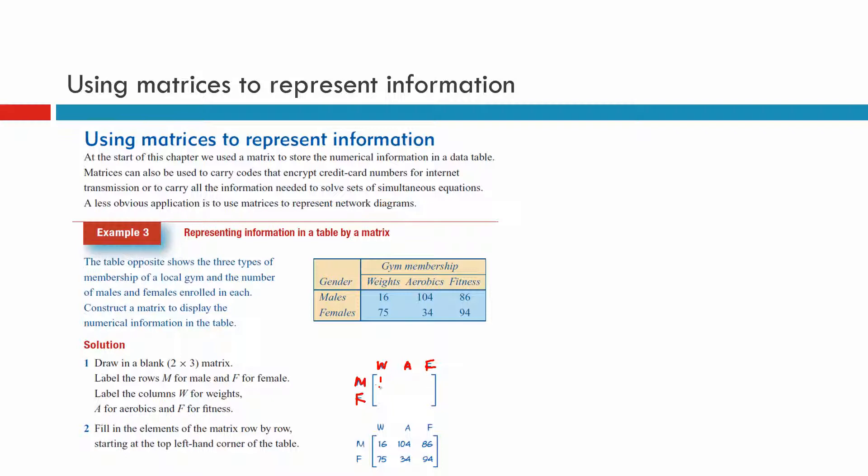So there was 16 weights that were males and 75 females that do weight membership, 104 for the aerobics males and 34 for the females, and 86 for the fitness males and 94 for the females. That's it, that's how we present information.